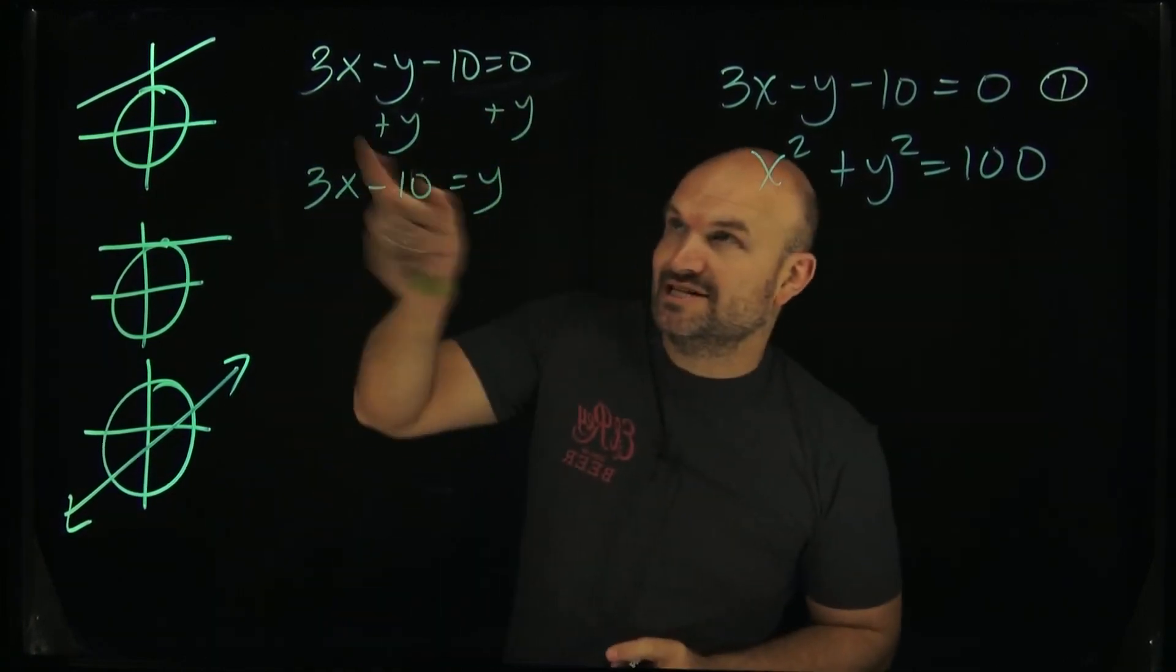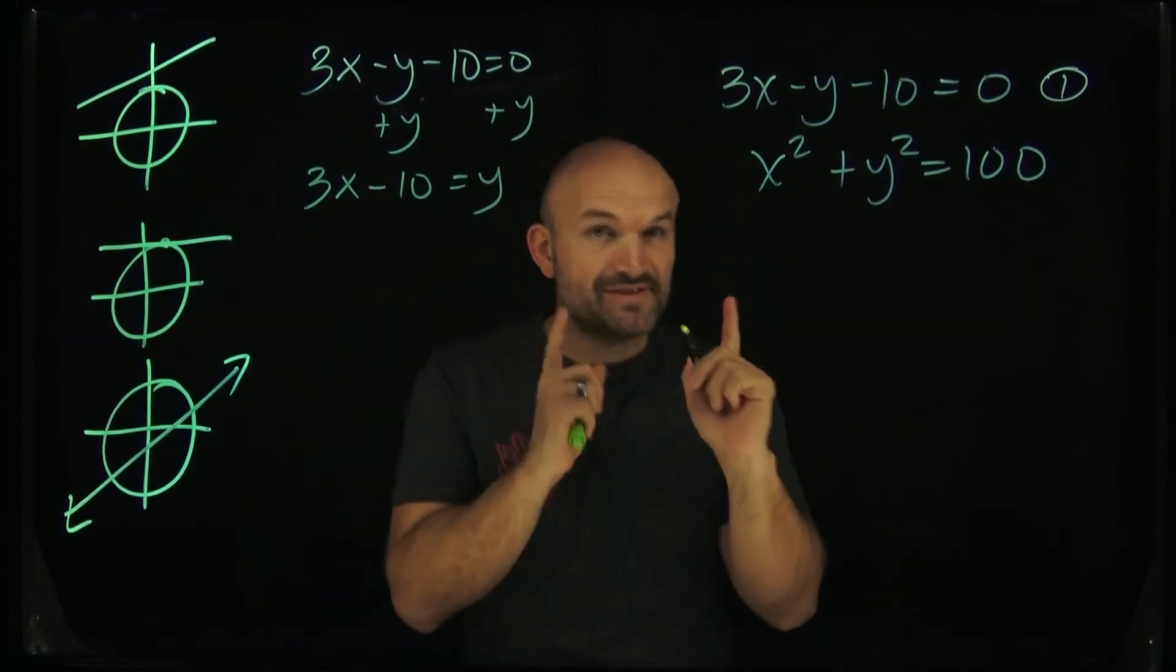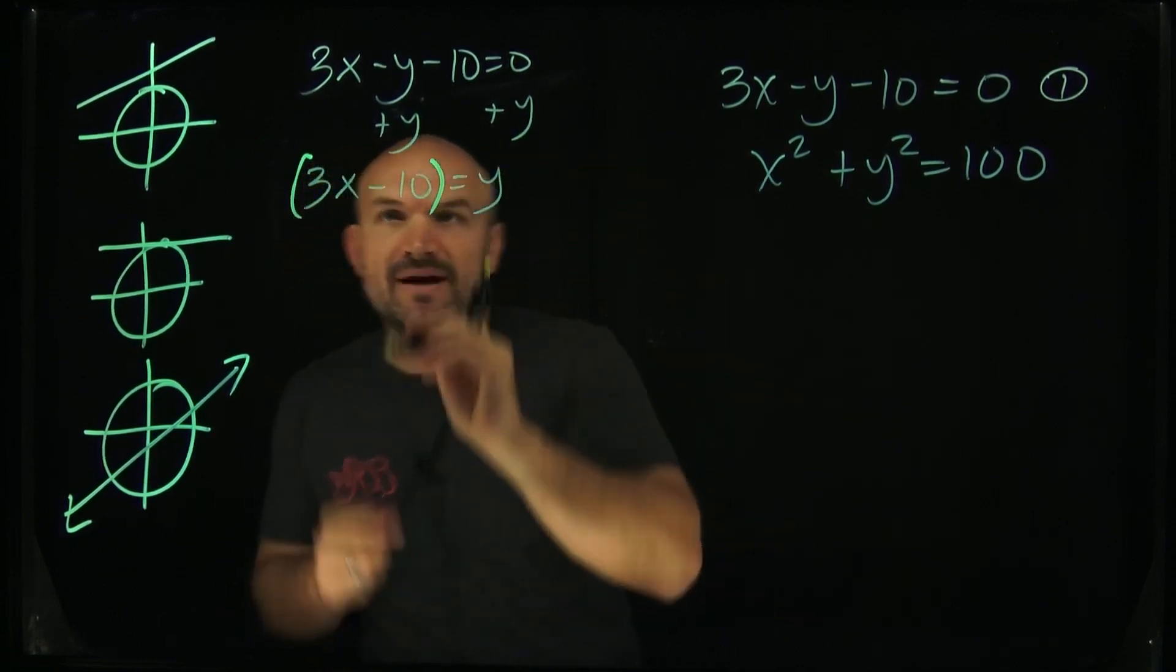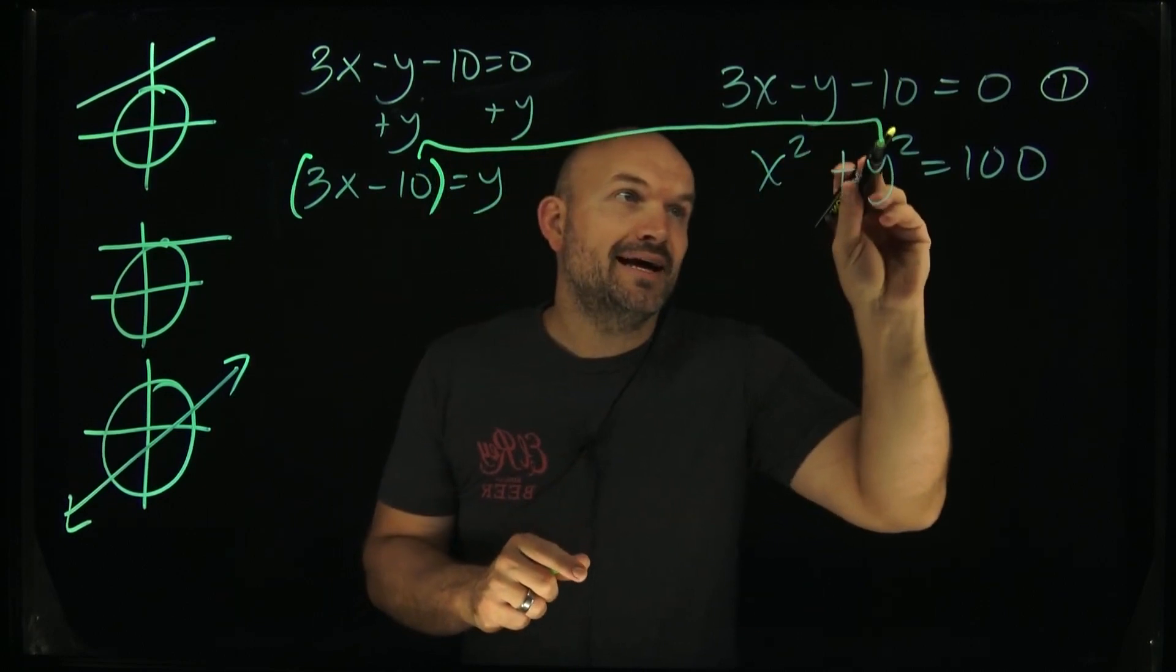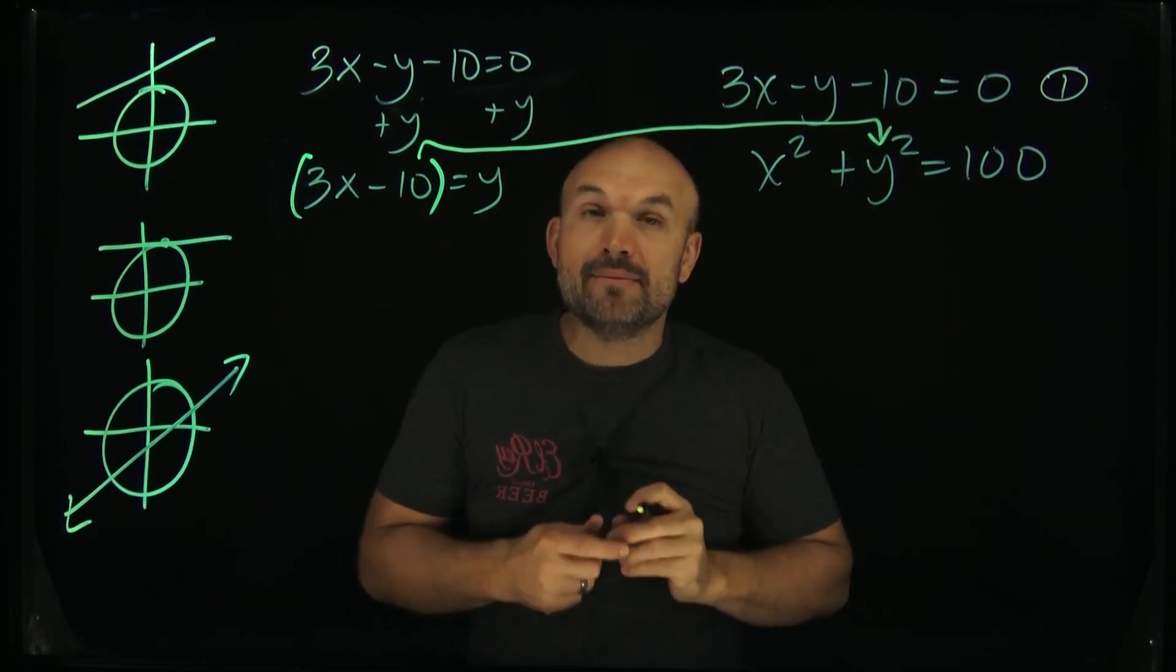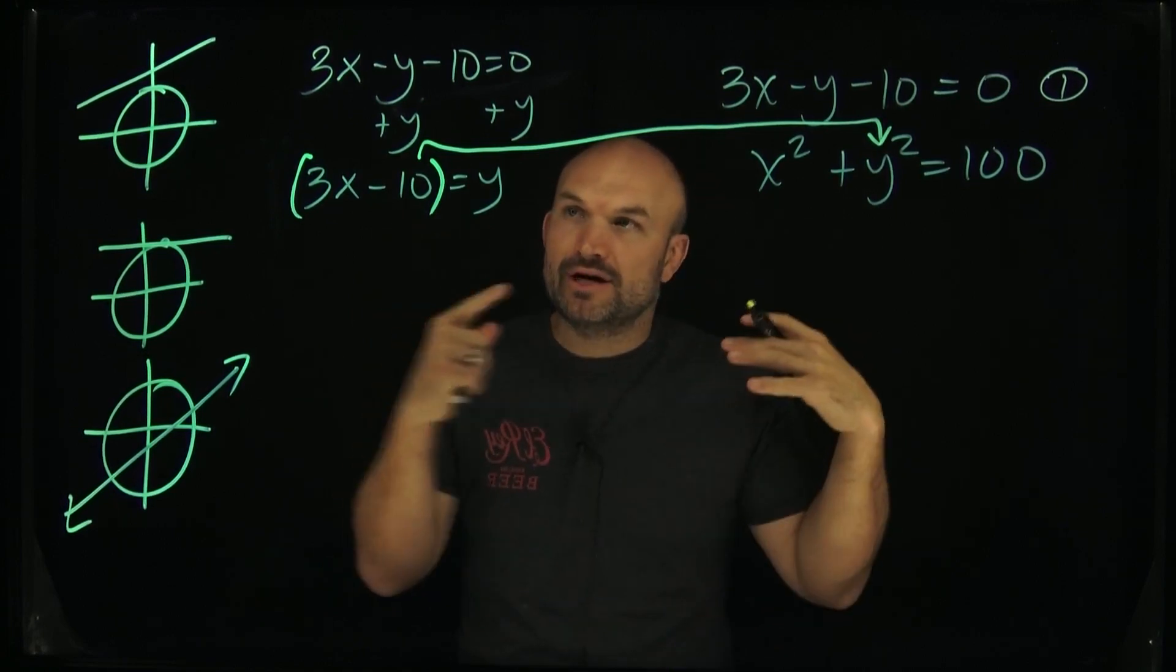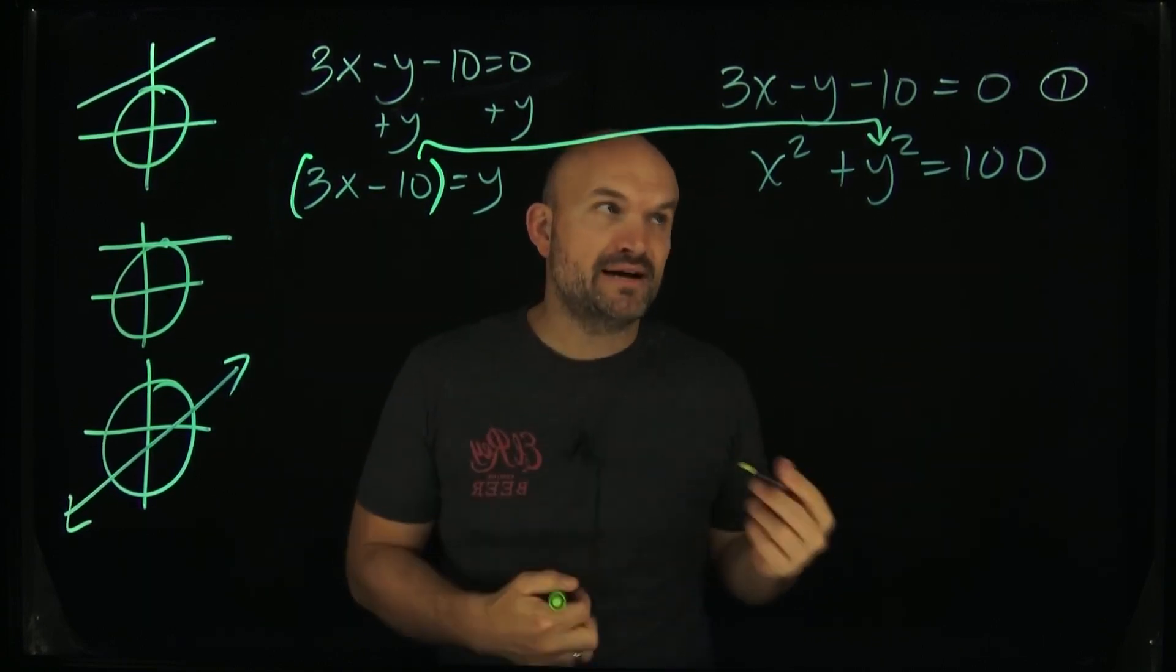Now you can see I just added the y to the other side, so now I have 3x minus 10 equals y. That's important because now I have this set as an expression, and I can plug this expression in for that value of y. Remember it's being squared, that's why I use those parentheses, because when we're squaring something we're going to be multiplying 3x minus 10 times 3x minus 10.